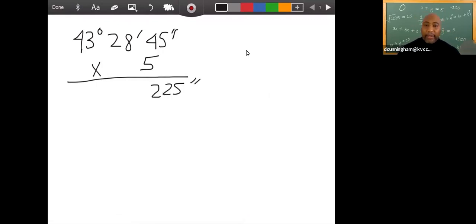And then we do five times the 28. The five times the 28 in our case is 140 minutes. And then the five times the 43. In our case, the five times the 43 will give us 215 degrees. So we just did the multiplication of each of the units.